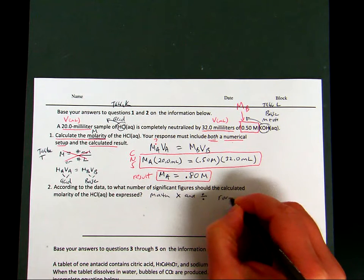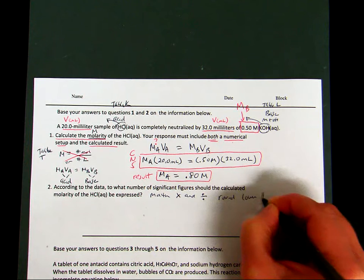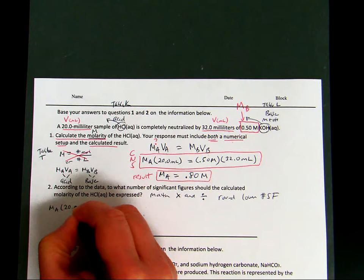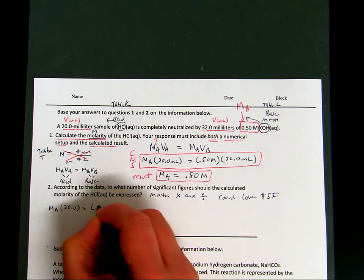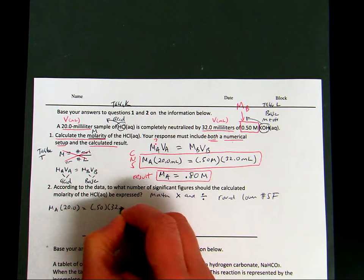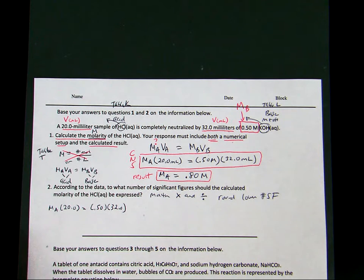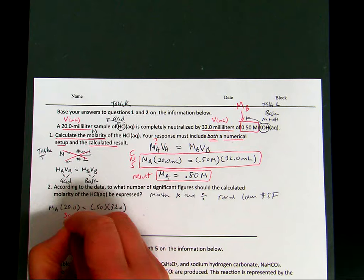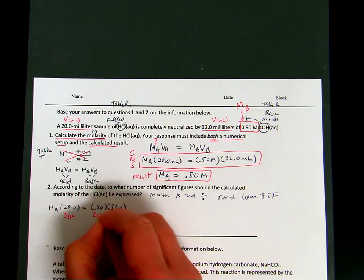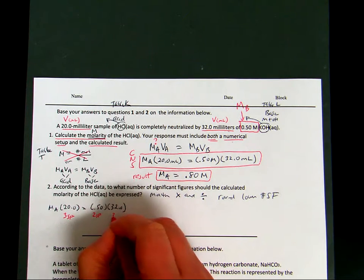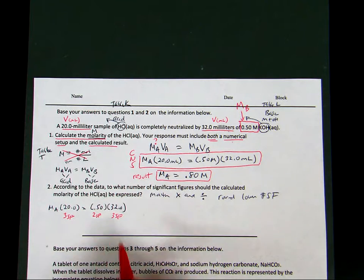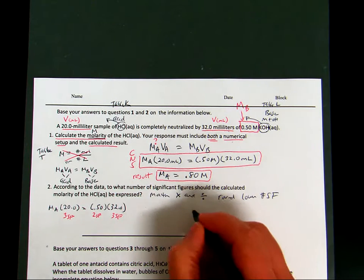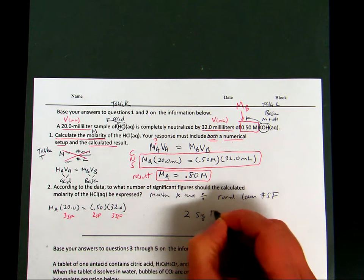So if I write this out, MA times the 20.0 equals the 0.50 times the 32.0. Notice, I'm not leaving off digits of 0. The 20.0 has 3 sig figs, the 0.50, 2 sig figs, and the 32.0, 3 sig figs. So I have to round to the lower number. So that means my final answer should contain 2 sig figs.